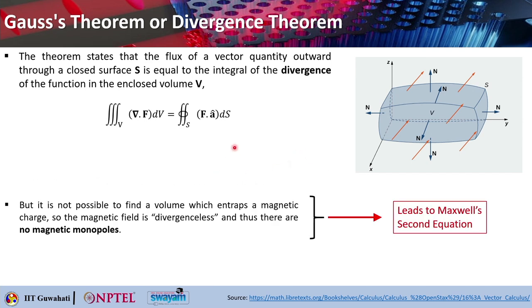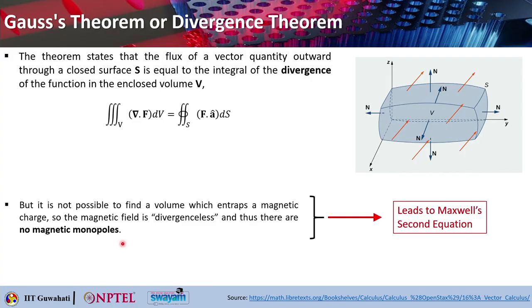For magnetic fields, it is not possible to find a volume that encloses a magnetic charge, because magnetic monopoles do not exist — you always have north and south poles together. Therefore the magnetic field is divergence-free: whatever enters the volume also exits it. The net flux is always zero, leading to Maxwell's second equation.